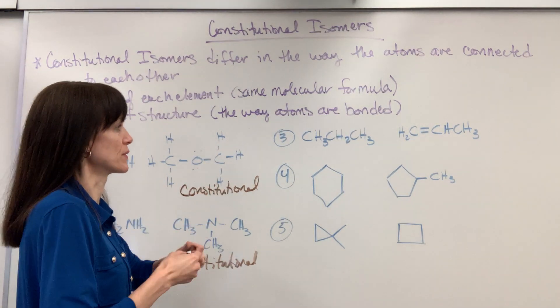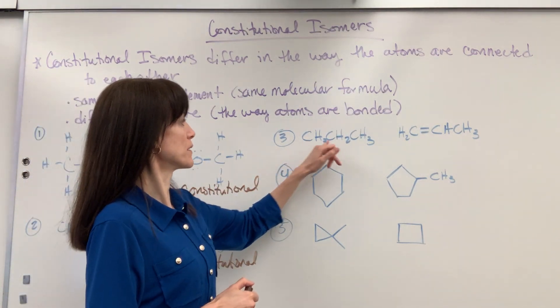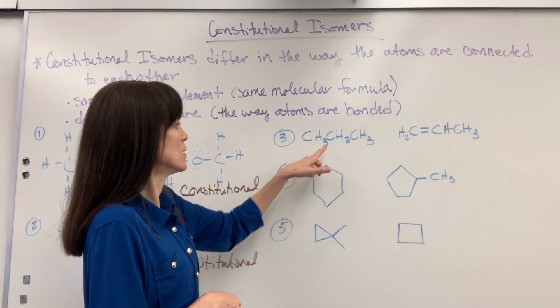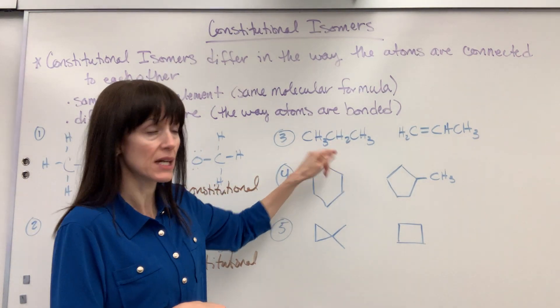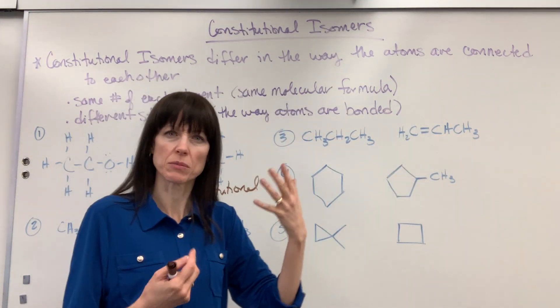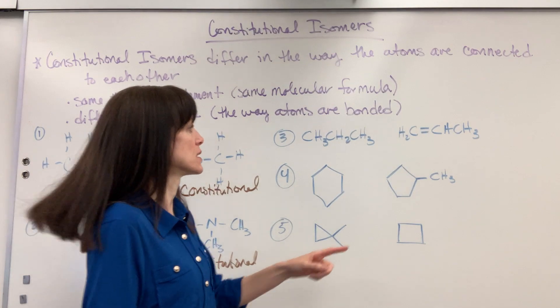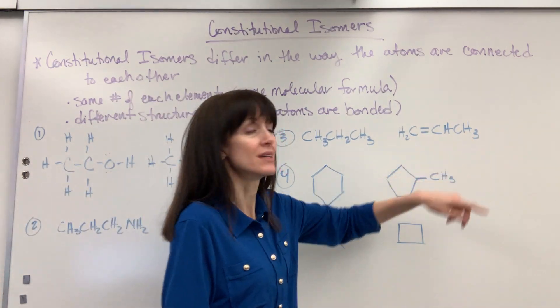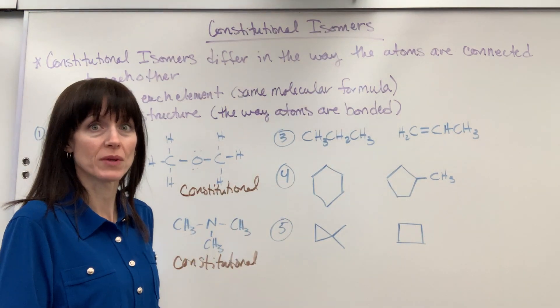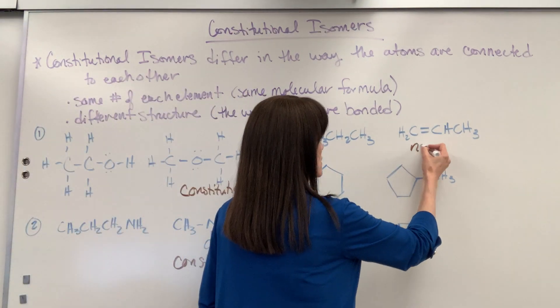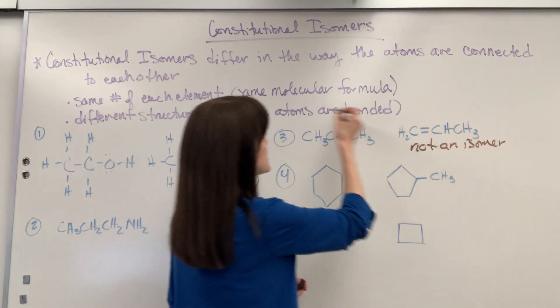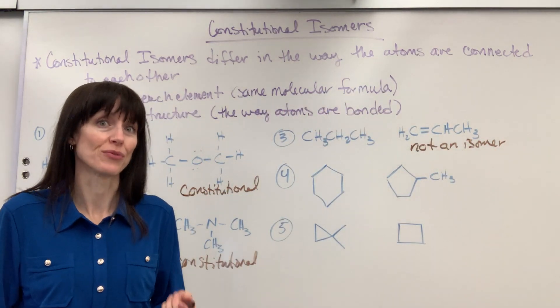Let's look at number 3. So here I've got my 3 carbons and let's count hydrogens just to make sure. We've got 3 plus 2 plus 3, 8 hydrogens. Over here I have 3 carbons. Notice there's a double bond. Let's count our hydrogens. We've got 3 plus 1 plus 3, 6. That does not have the same molecular formula. So this is not an isomer. Not an isomer.